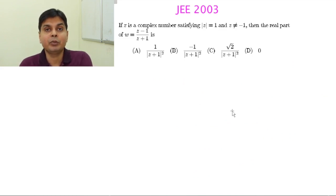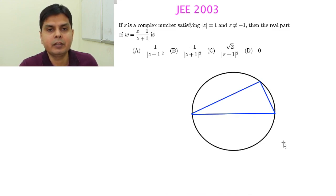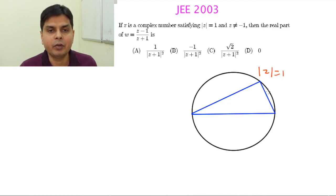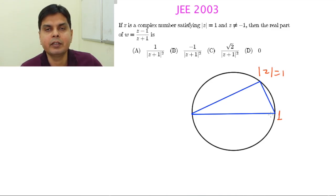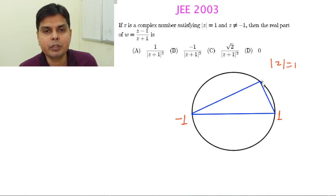Now let's solve the same problem using a fourth method, this time using geometrical properties of complex numbers. We have W equals (Z minus 1) by (Z plus 1) and mod Z equals 1. This means Z lies on the unit circle. On the real axis, the circle intersects at plus 1 and minus 1. Suppose Z is a point on this circumference. Then Z minus 1 is the vector from 1 to Z, and Z plus 1 is the vector from minus 1 to Z.